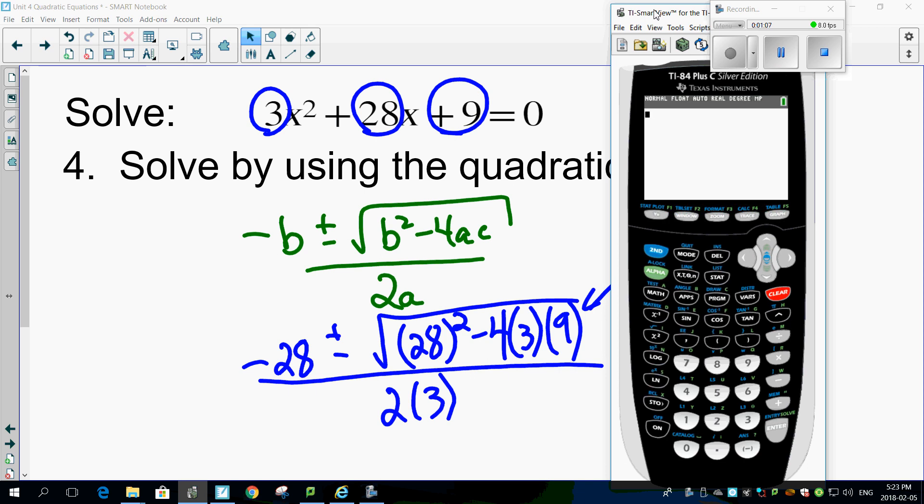And let's do what's inside that square root first. So there it is. 28 squared minus 4 times 3 times 9 gives you, boom, 676. Let's take the square root of that. Second square root of the second answer. Boom. Gives us 26.